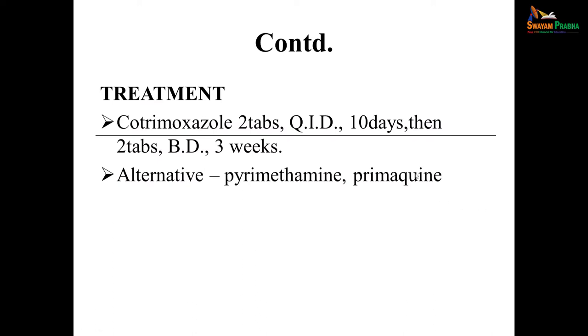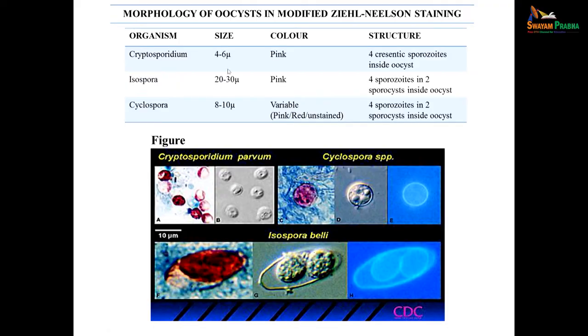Treatment is co-trimoxazole, two tablets QID for 10 days then two tablets BD for 3 weeks. Alternatively, pyrimethamine or primaquine can be given. Comparing the morphology of the three organisms: Cryptosporidium is the smallest at 4–6 microns, stained pink by acid-fast staining, with 4 crescentic sporozoites inside the oocyst. Isospora is the biggest at 20–30 microns, also pink, with 2 sporocysts each containing 4 sporozoites. Cyclospora is intermediate at 8–10 microns, staining variably pink or red, with 2 sporocysts each containing 4 sporozoites.